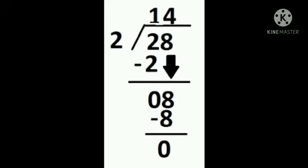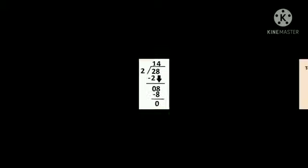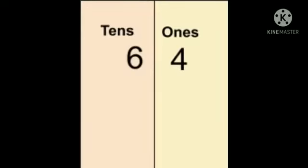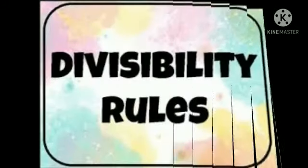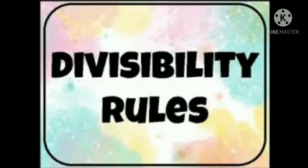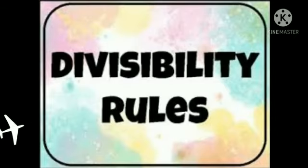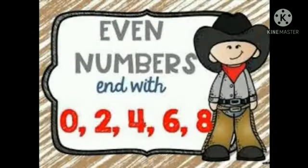Let us look at another number, 64 — six tens and four ones. Now, look closely at the digit in the ones or unit column. The basic rule in looking at numbers that are divisible by 2 is that the digit in the unit column is always an even number.